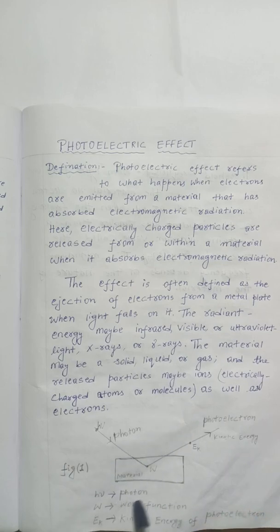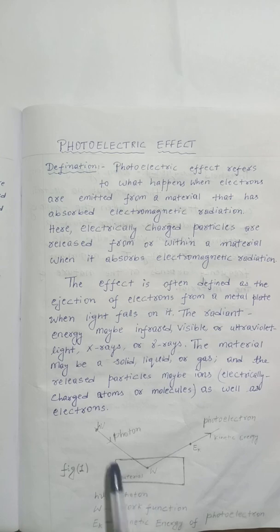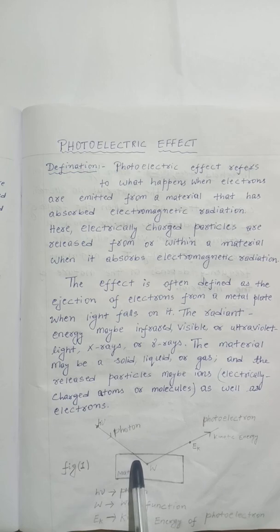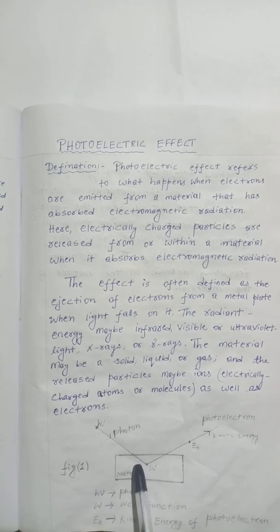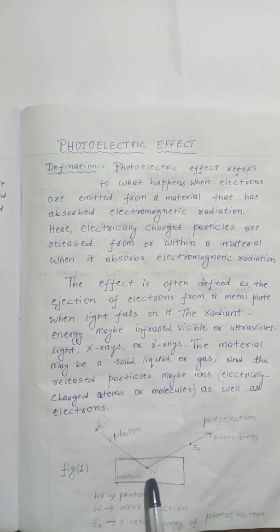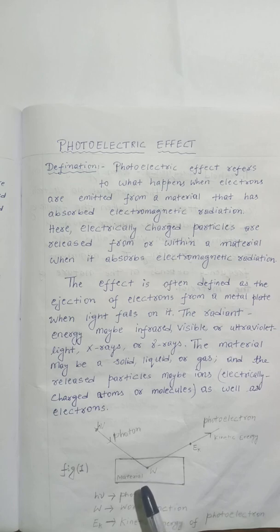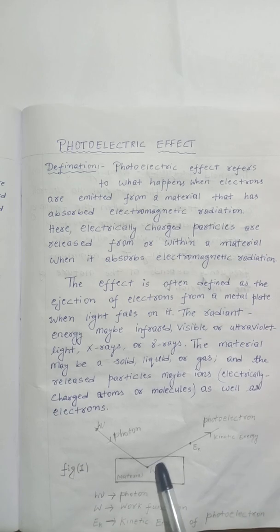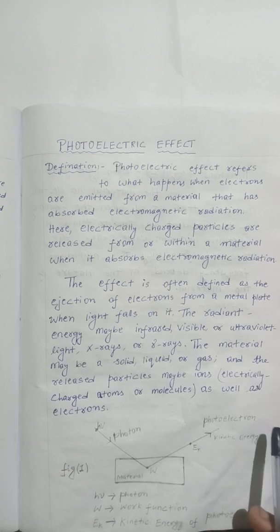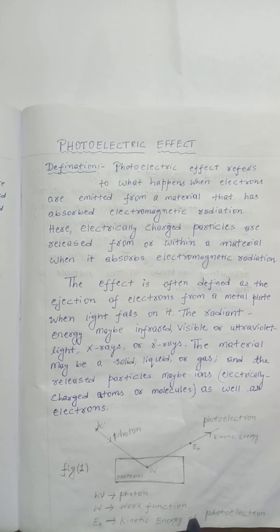This is the diagram showing the phenomenon of the photoelectric effect. When light or a photon falls on a material surface, some electrons in the surface absorb enough energy from the incident photon to overcome the attraction of the positive ions in the material of the surface. After the electrons gain sufficient energy from the incident photon, they escape from the surface of the material into the surrounding space and are called photoelectrons. Here, H-nu is the photon energy, W is the work function, and Ek is the kinetic energy of the photoelectron.